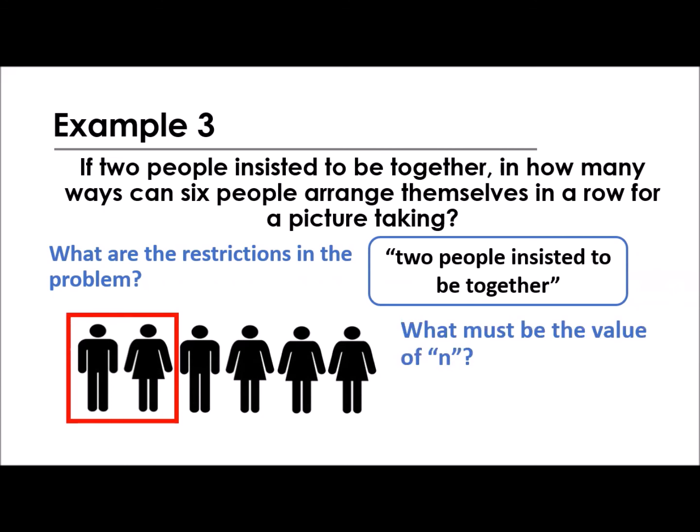So with those 6 people, and then there are 2 people who insisted to be together, what must be the value of n? What do you think? Is it still the same 6 people? No. The 2 people here insisted to be together, so that means they are counted as 1. In a couple, they say, couples are counted as 1. Or 2 people insisted to be together. And then this one is the 2nd, the 3rd, the 4th, and the 5th. So n is equal to 5.